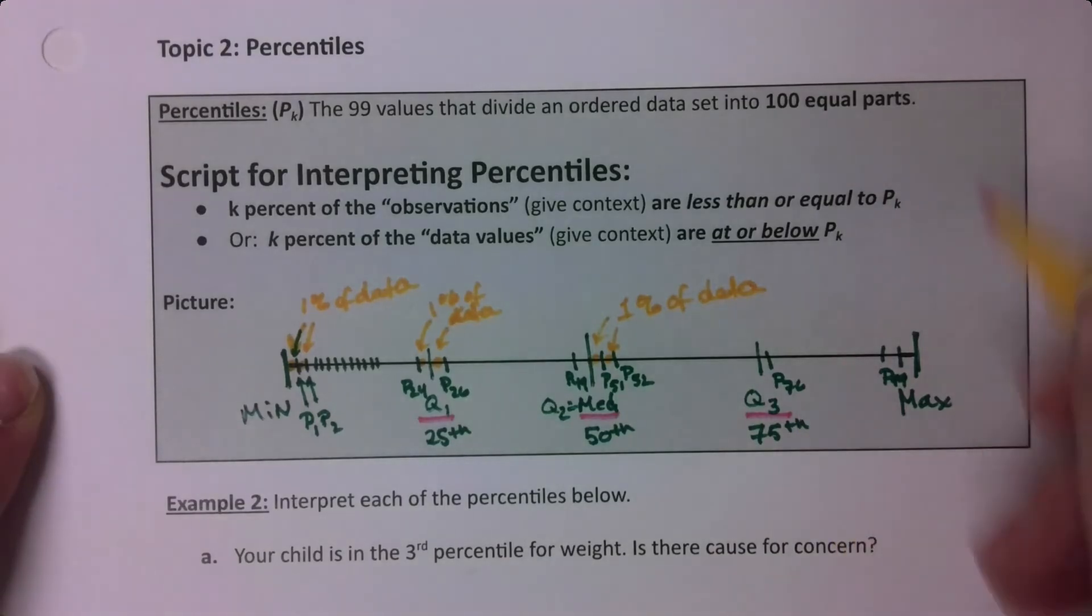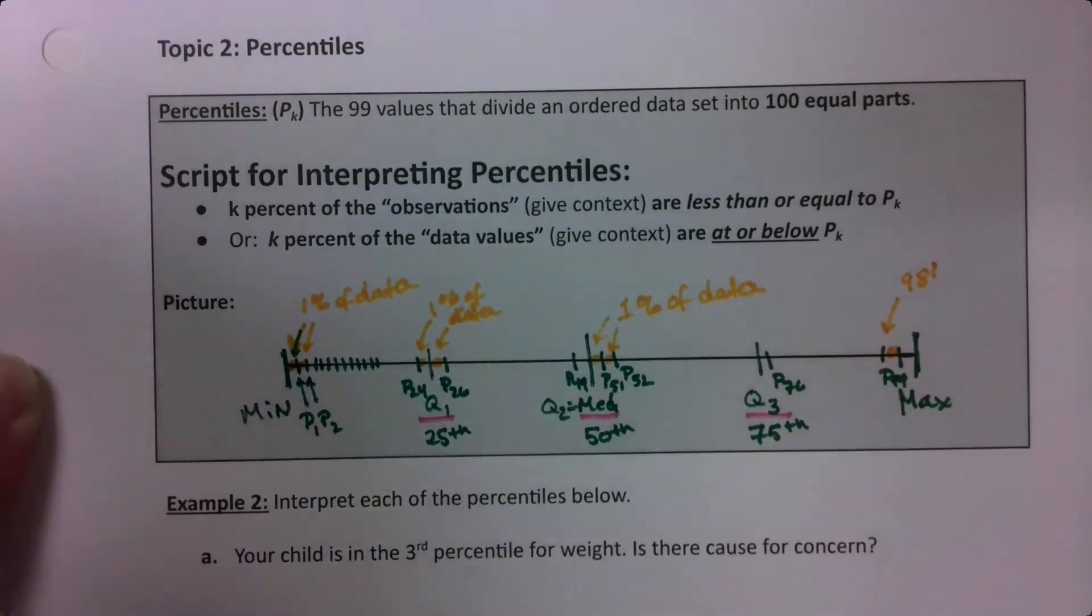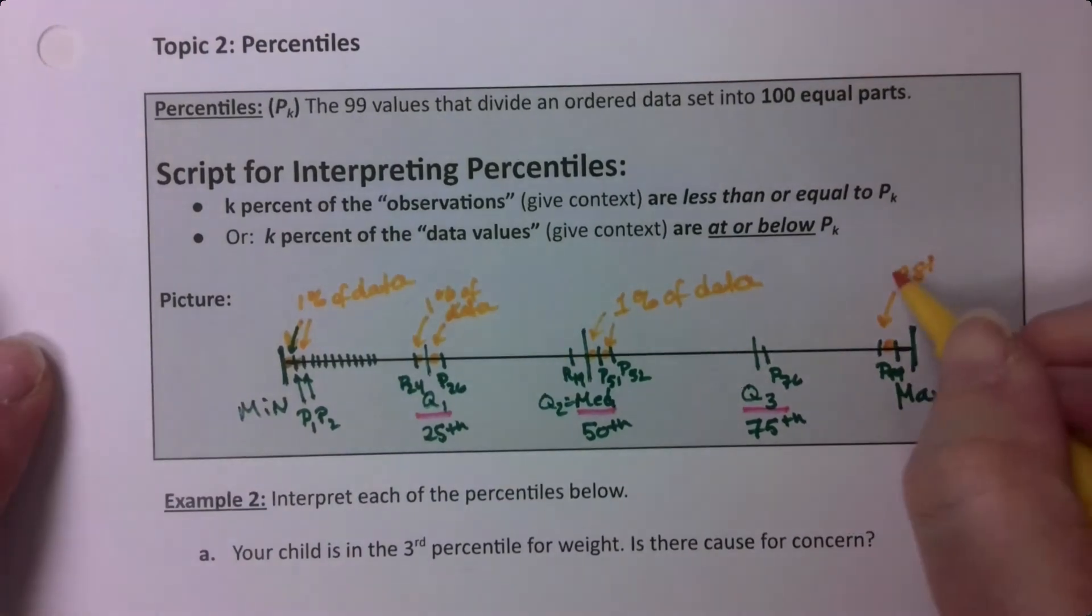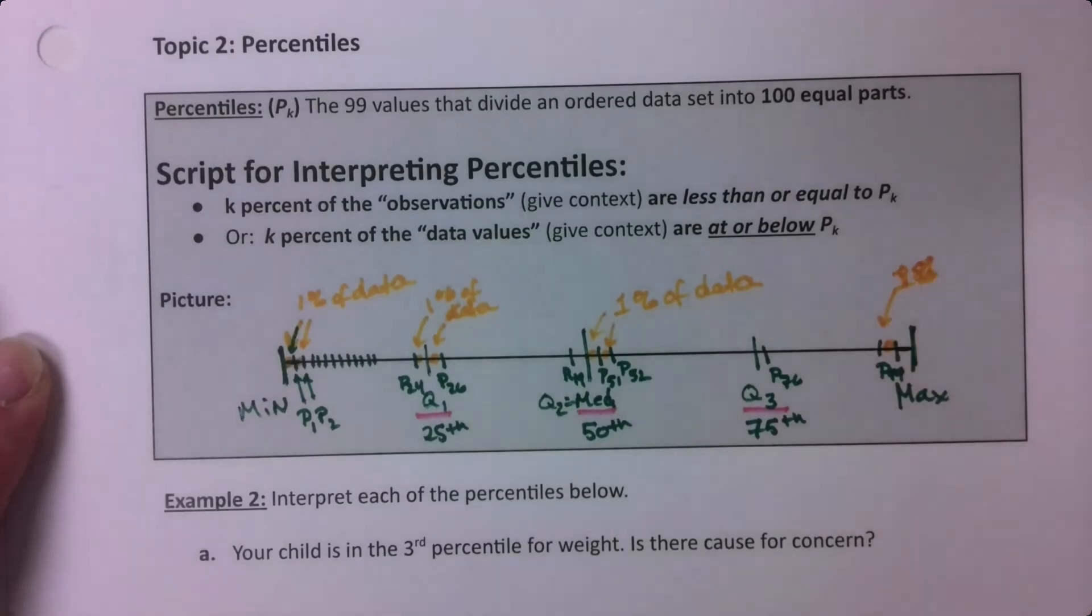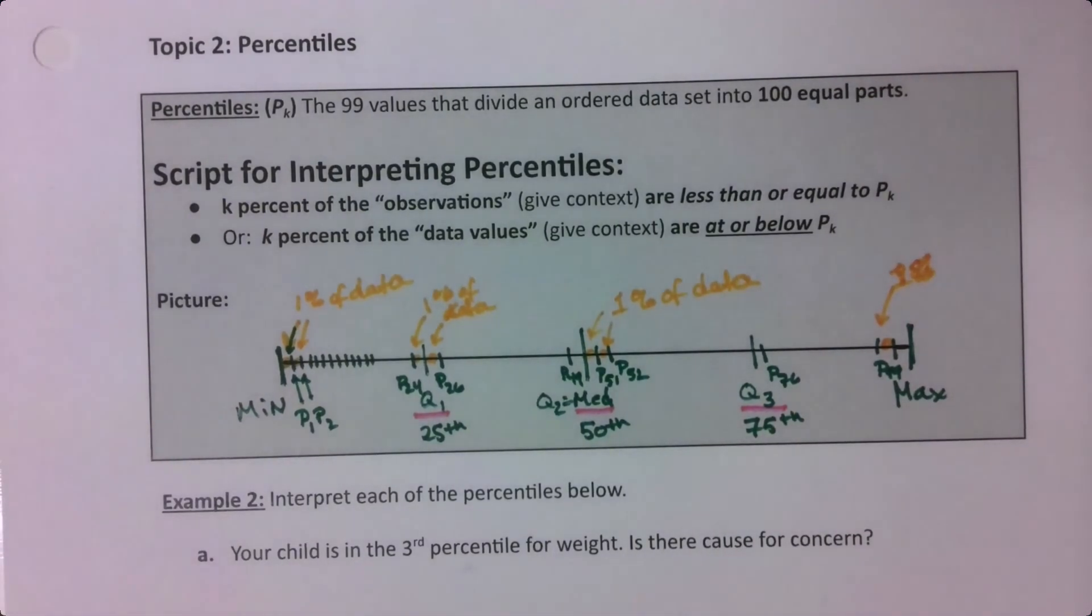And when your parents get those scores back, it tells you, my child was in the 98th percentile. So 1% is at or below that value.